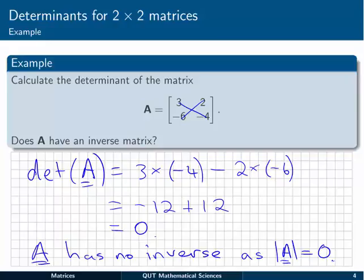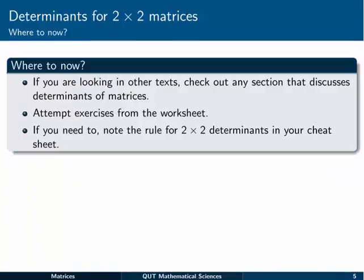Okay, so that's how we calculate determinants of 2 by 2 matrices. Fairly easy. That is one of the key elements though of determining a matrix determinant for a bigger matrix. Anyway, for now, probably not much to do here except for attempting the exercises from the worksheet. And if you think you need to, note down that rule for 2 by 2 determinants in your cheat sheet.